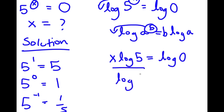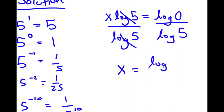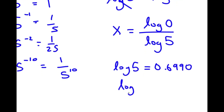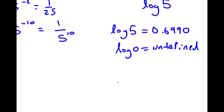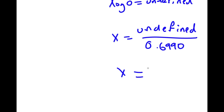If I divide both sides by log 5, log 5 is equal to 0.6990, but log 0 is actually undefined. So I have x equals undefined over 0.6990. If something's undefined and you divide it by a number, it's still undefined. So the value of x is undefined — meaning there is no solution.